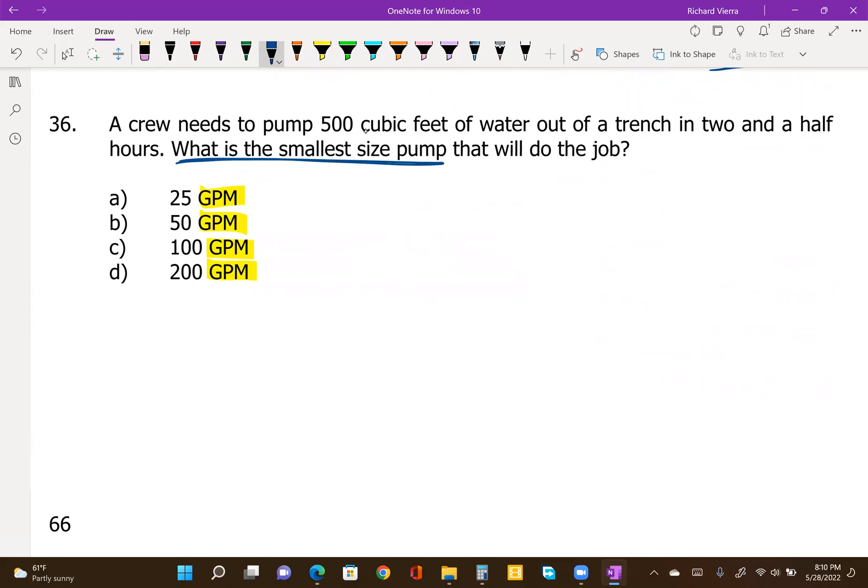But this one we're going to do a little differently because we have two different conversions to perform. To calculate our flow in gallons per minute means gallons divided by minutes. So we get a volume in gallons that we're going to divide by a time in minutes. So our volume, in example number 36, is given as 500 cubic feet of water, which we're going to have to convert into gallons by multiplying by 7.48 gallons per cubic foot. So we take that 500 cubic feet of water times 7.48 to get that number in gallons.